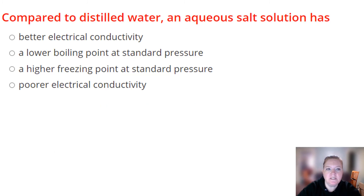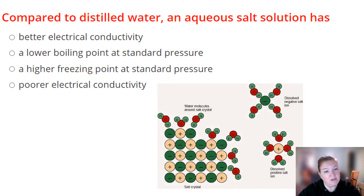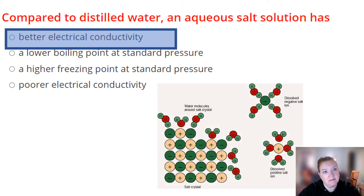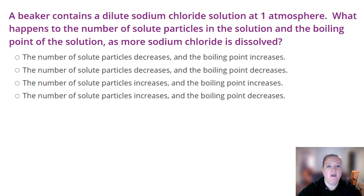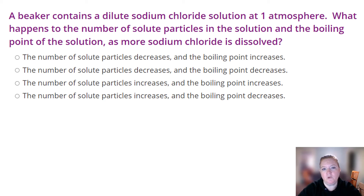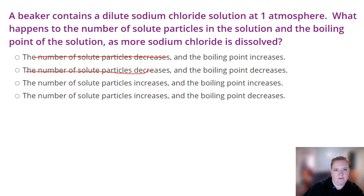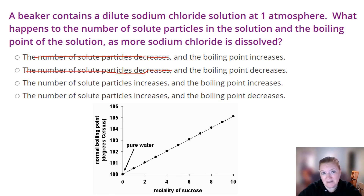Compared to distilled water, an aqueous salt solution has better conductivity because the salt separates into ions. If more sodium chloride is dissolved in a dilute NaCl solution, the number of particles increases and — since more particles means a higher boiling point — the boiling point increases as well.